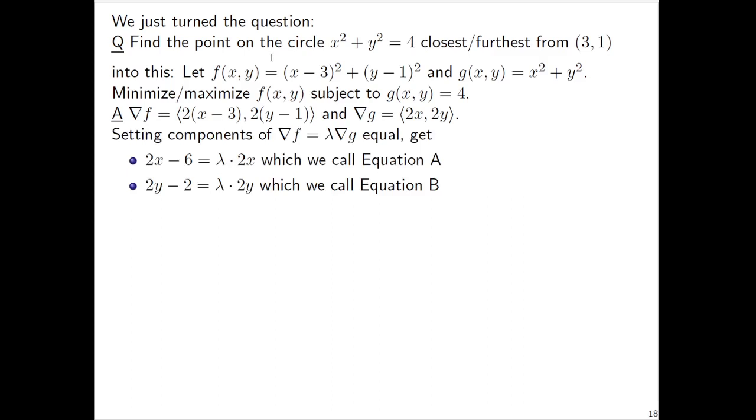I computed the gradient of f using chain rule. We'll set ∇f = λ∇g, and we'll have: First components, 2x - 6 = λ(2x), call that equation A. 2y - 2 = λ(2y), call that equation B. The original constraint we'll call equation C.